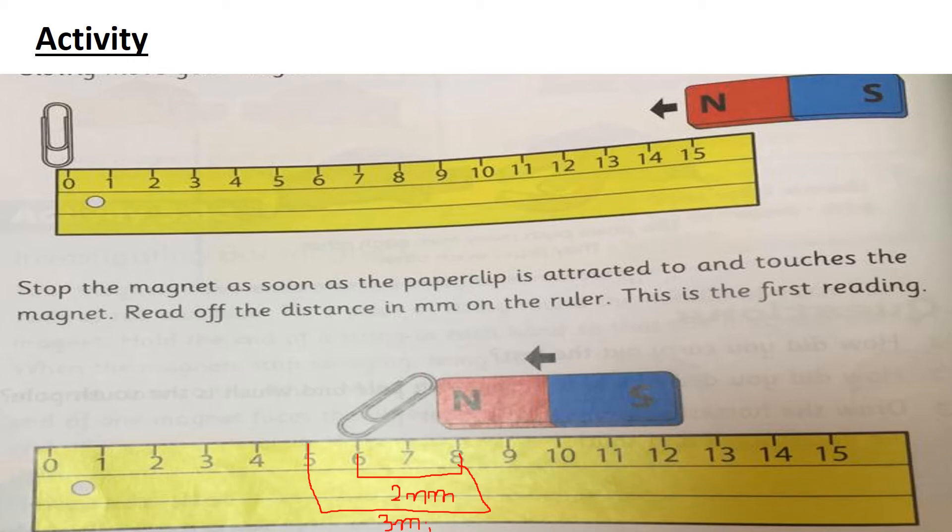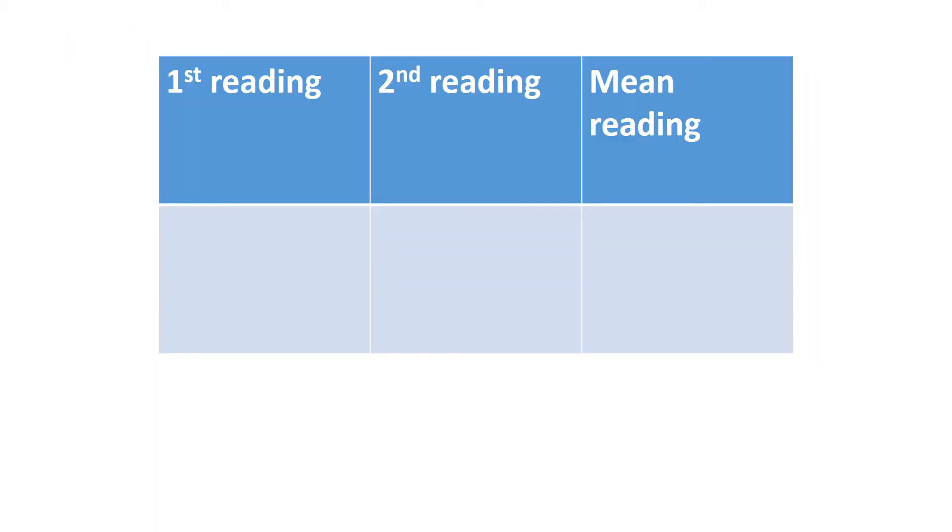So we have, actually we need to collect more readings. So first, my first reading is two millimeters. And second reading is three millimeters. So always the readings are changed because there is a slight. No one is accurate. So we need to now find out the mean reading. How can we find out? We need to add both of them. Two plus three. And how many values we have? Two values. So we need to divide it by two.